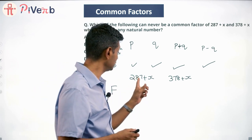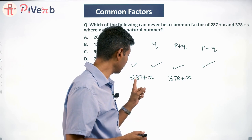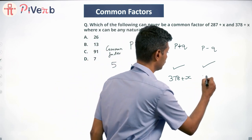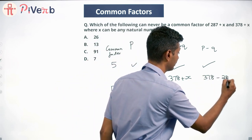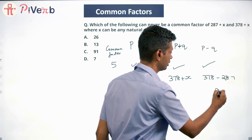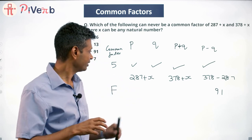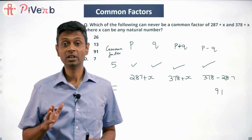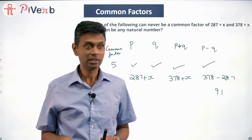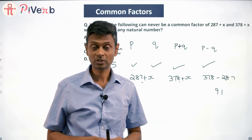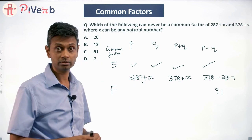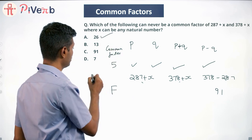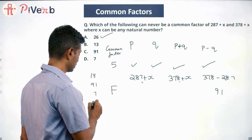Applying this to our question: if f is a factor of both (287 + x) and (378 + x), then it will automatically be a factor of their difference. Subtracting: (378 + x) − (287 + x) = 378 − 287 = 91. So f must be a factor of 91. Conversely, if a number is NOT a factor of 91, then it cannot be a common factor of both (287 + x) and (378 + x) for any x. That number is what we're looking for.